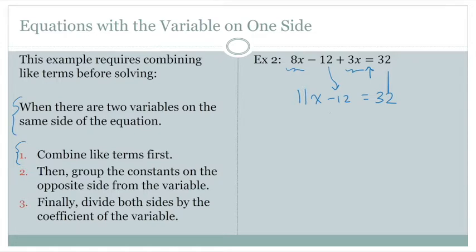Now we would like to combine the constants on the opposite side from the variables. So we see we have 11x. The 12s cancel. We bring down our equal sign, and 32 plus 12 is 44.